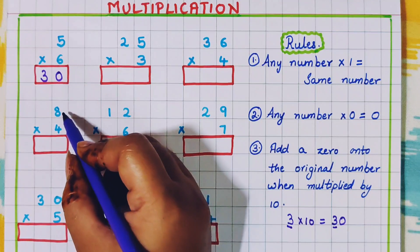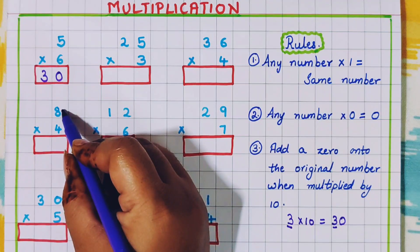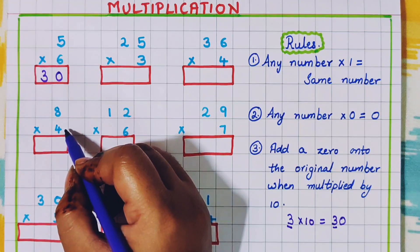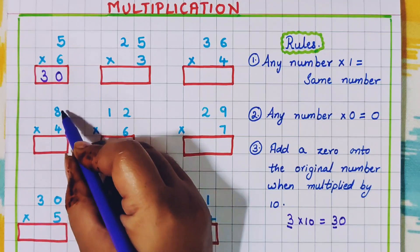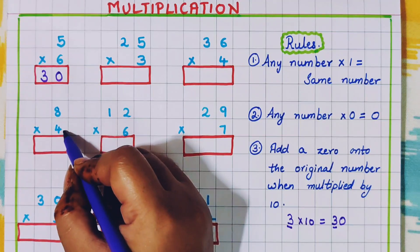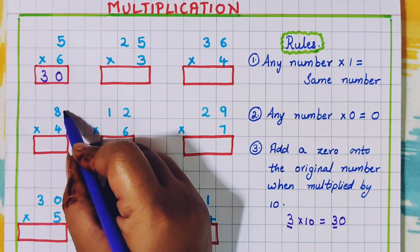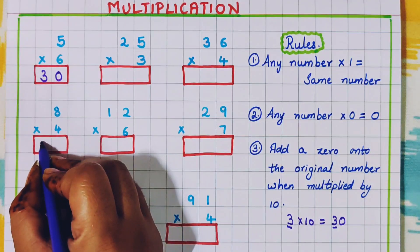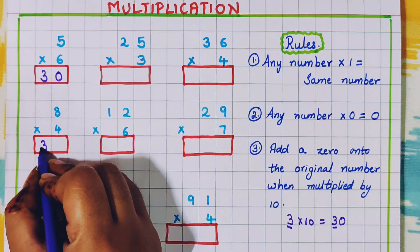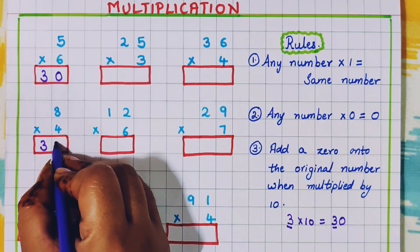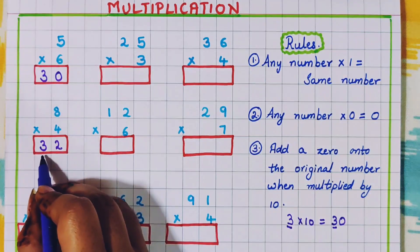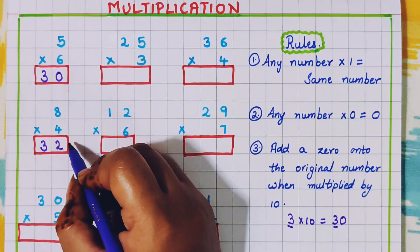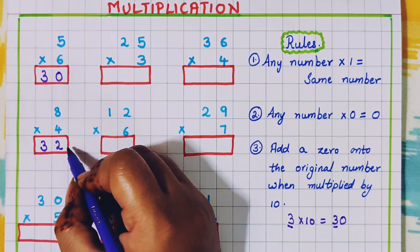Now let's see one more single digit multiplication: 8 into 4. So how will I do the multiplication? 4 8s are 32. Here I will write 3 and in the 1s place I will write 2 — 32. So this is the way we do single digit multiplication.